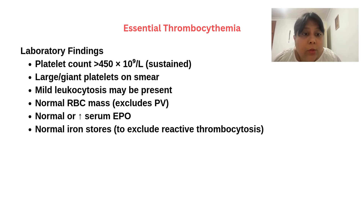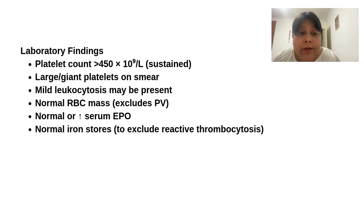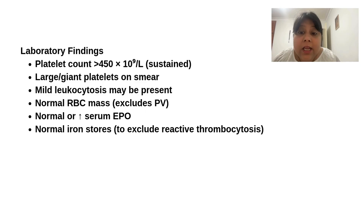In laboratory findings, the platelet count is more than 4.5 lakh per microliter, which is normally sustained over periods of months. Large or giant platelets are seen on peripheral smear. Mild leukocytosis may be present. Normal RBC mass — which excludes polycythemia vera — and normal or increased serum erythropoietin levels are seen, and iron stores are normal.